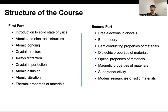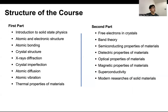The second part goes more into the electronic properties of the material. First, we need to understand free electrons in the crystal, and subsequently we need to understand band theory. Then we will go to semiconductor properties of material, based on the free electron model and band theory. After that, we will go to dielectric properties and optical properties of material. Then electronics and mechanical properties are brought together. I'll also give you information about mechanical properties of materials, superconductivity, and finally the more recent research of solid materials.